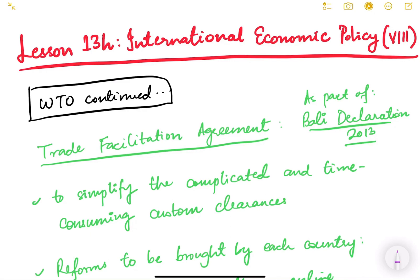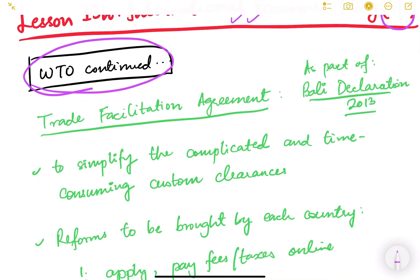Hello friends, let us continue with international economic policy. This is the eighth video of this particular lesson, and in this video we'll continue about WTO — this is the third video in which we are discussing the World Trade Organization. It's a very important international body relating to international trade, and since India is a major player, UPSC has also asked questions on WTO, which is why we are giving it so much attention.